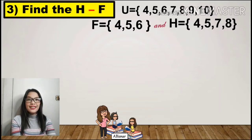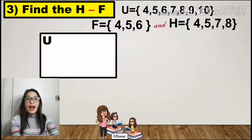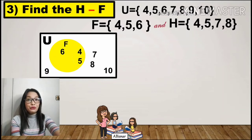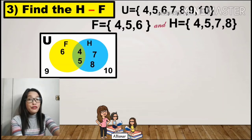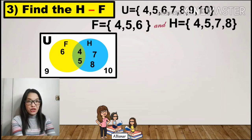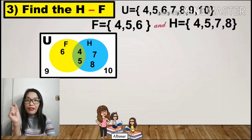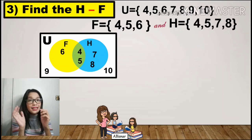For number 3, the universal set has the elements 4, 5, 6, 7, 8, 9, and 10. Set F has the elements 4, 5, and 6, and set H has the elements 4, 5, 7, and 8. Notice that 4 and 5 will be the intersection. Also notice that 9 and 10 are not part of the elements of F and H — they are in the universal set but not in F or H.